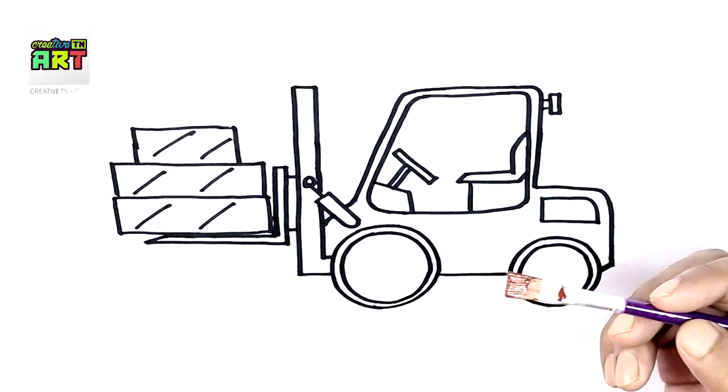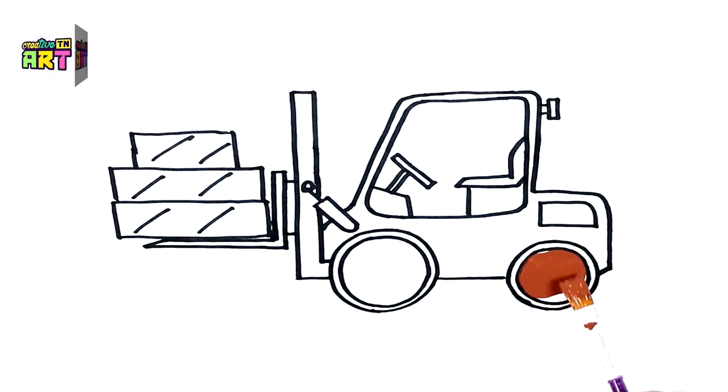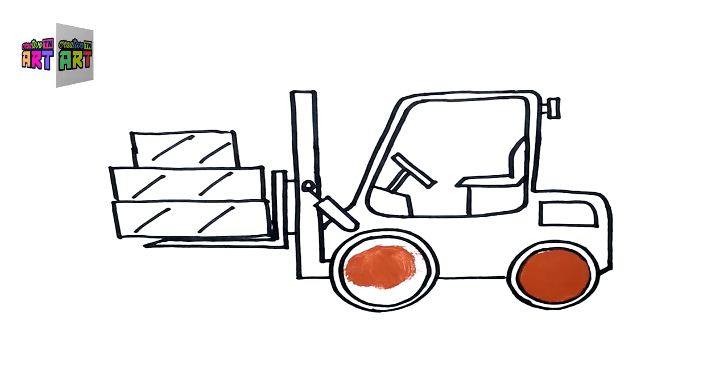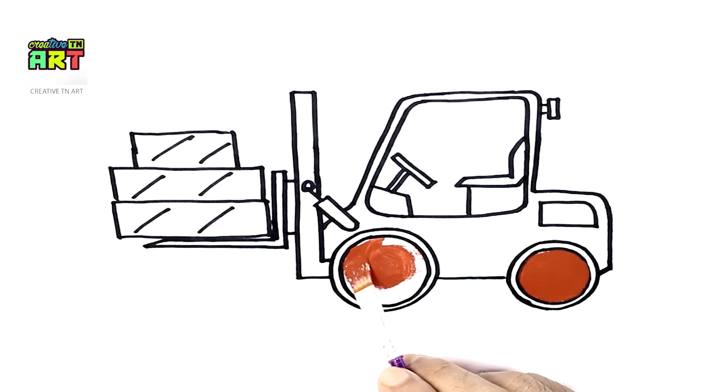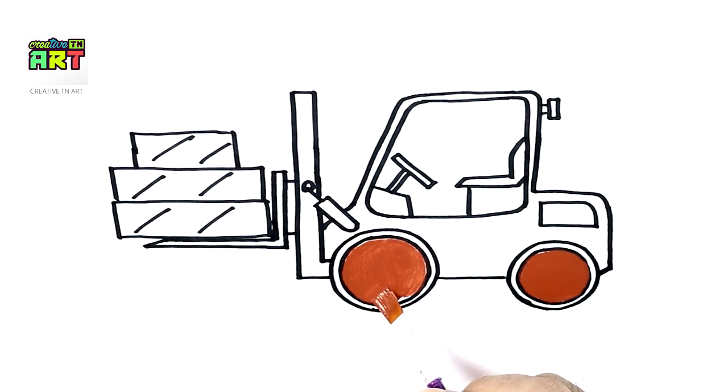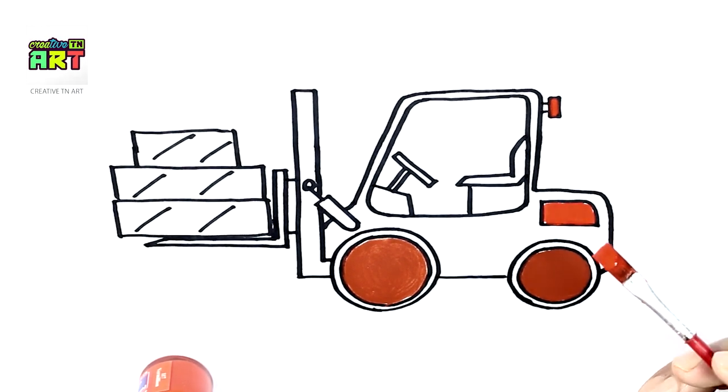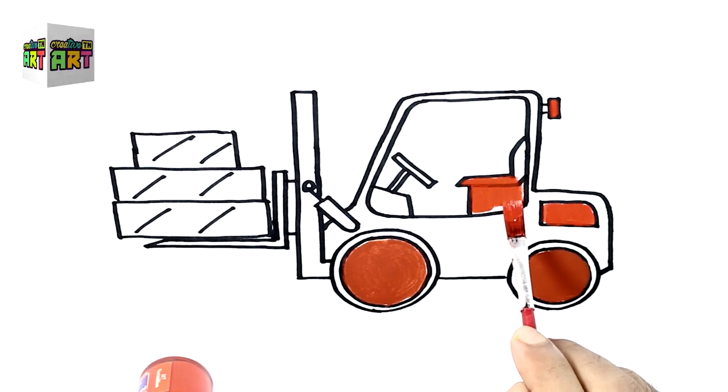And now I will add some color. Oh, so you are using the red color for the forklift wheel? Yes, I am using red color wheel. I will add black color later. But for now, just red for the light, red for the seat.